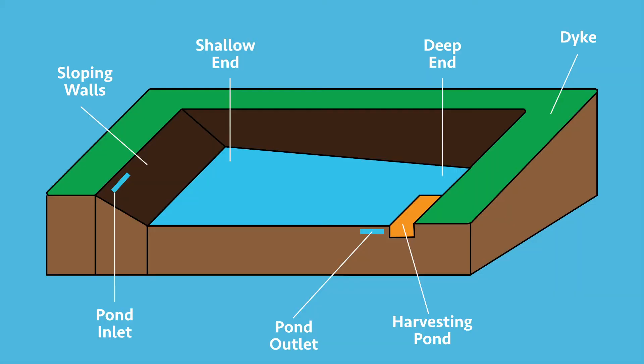Remember, you cannot construct a fish pond without an inlet and an outlet. An inlet is where water comes in, and the outlet is where water flows out. The inlet is usually located at the shallow end of the fish pond, while the outlet is located at the deep end. The outlet is usually used during harvesting, as it helps in draining the water.